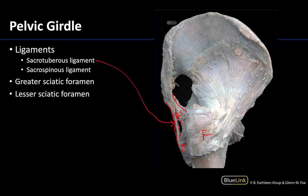When these ligaments are present they transform those greater and lesser sciatic notches into the greater and lesser sciatic foramina. The greater sciatic notch with the ligaments forms the greater sciatic foramen, and between the ischial spine and ischial tuberosity the lesser sciatic notch becomes the lesser sciatic foramen. This creates more complete circles or ovals for the neurovasculature to travel through, providing additional protection along with the bone for that neurovasculature.